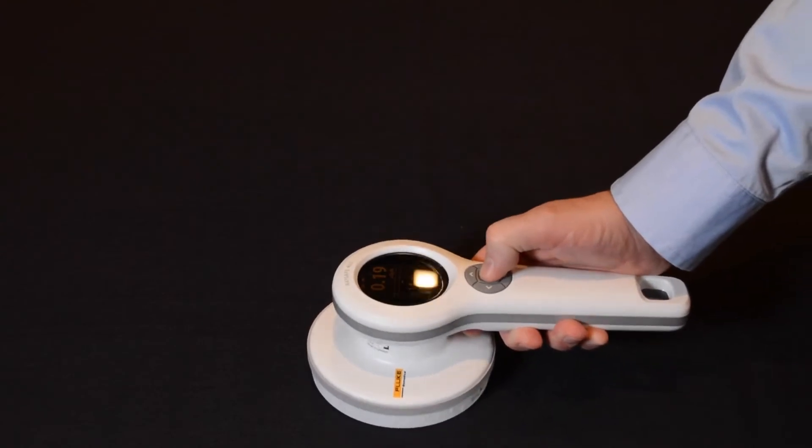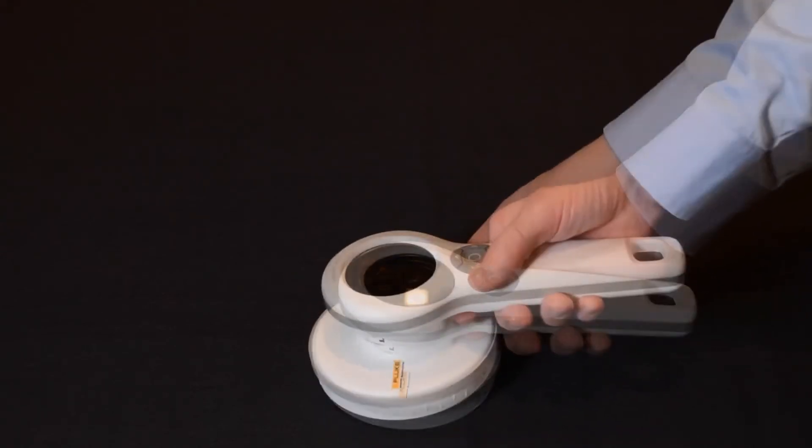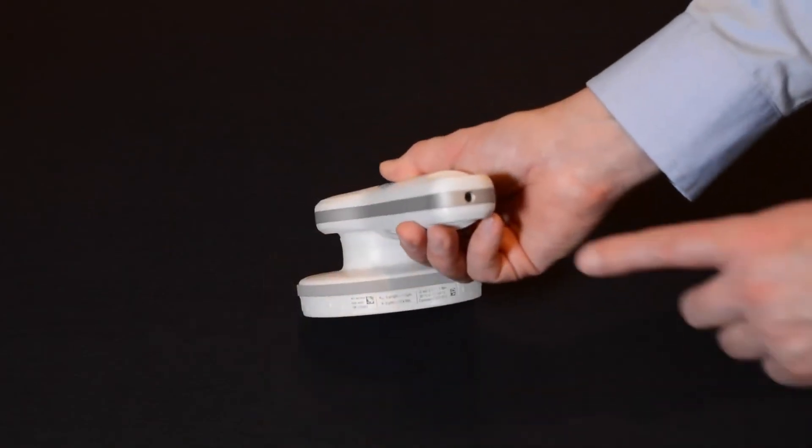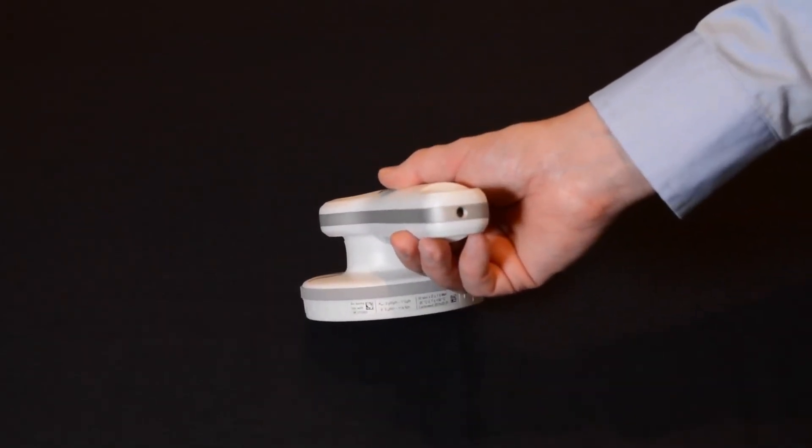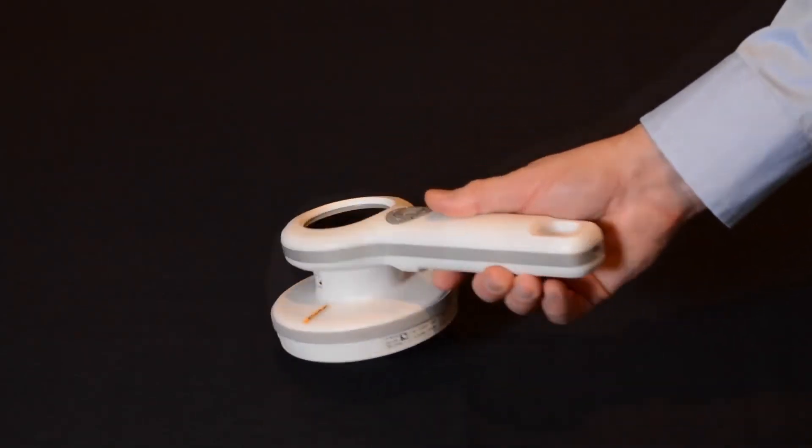The buttons are within easy reach of your thumb when holding the device. You can add a shoulder arm or wrist strap for easy carrying. There is a threading at the end of the device, so you can place the meter on a camera tripod.